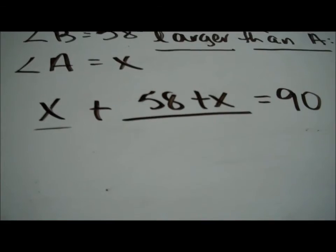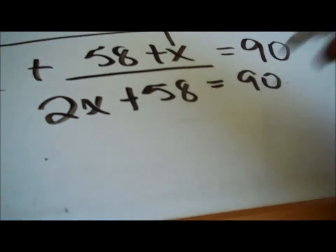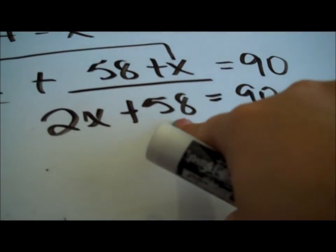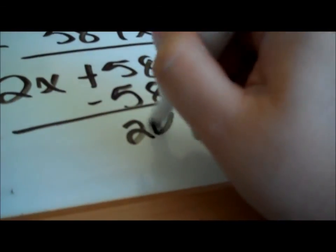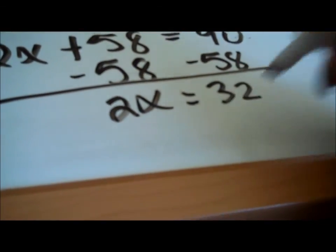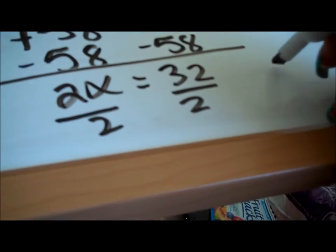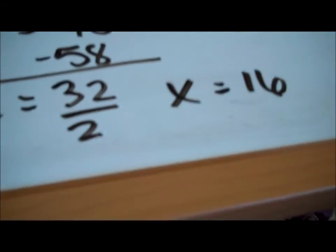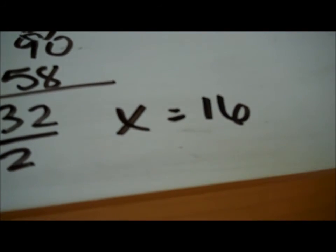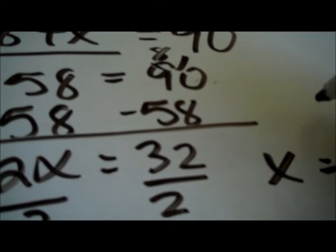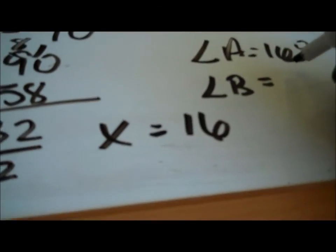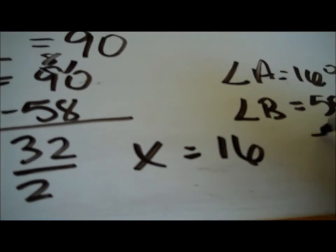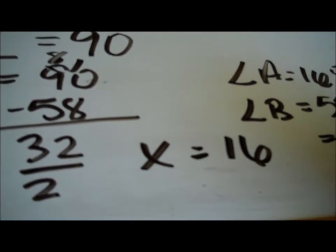Is the left hand side simplified? No — combine like terms: 2x plus 58 equals 90. Multiplication happened second, addition first, so subtract 58 from both sides to get 32, then divide by 2: x equals 16. So angle A equals 16 degrees. Angle B is 58 plus 16 degrees, so angle B equals 74 degrees.